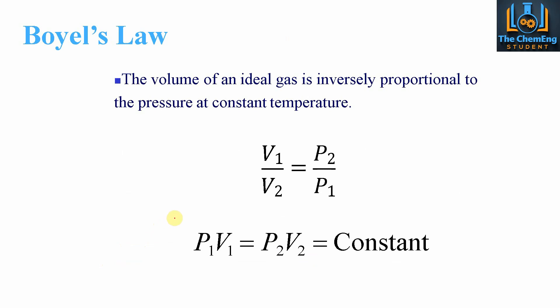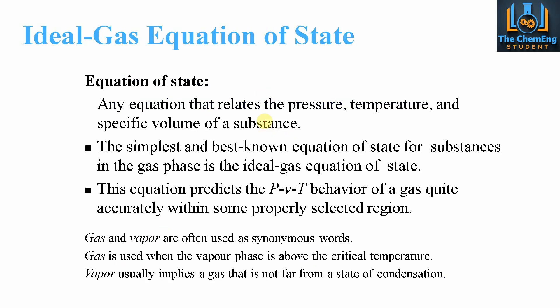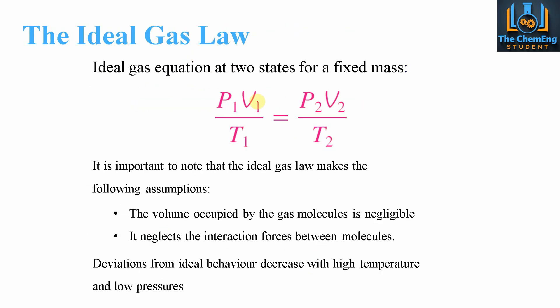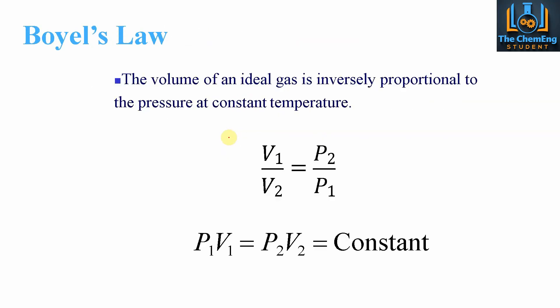So the first one here is Boyle's Law. Boyle's Law has the ratio between the volume and the pressure. What we have fixed here is the temperature. From this equation here, this is what we're going to manipulate between the pressures, the specific volume, and the temperatures. By fixing the temperature, we have the ratio of the volumes, V1 over V2 equals the ratio of P2 over P1. When we cross-multiply these, we get P1V1 equals P2V2, and that would equal some form of constant.